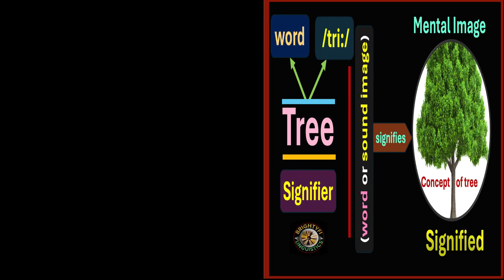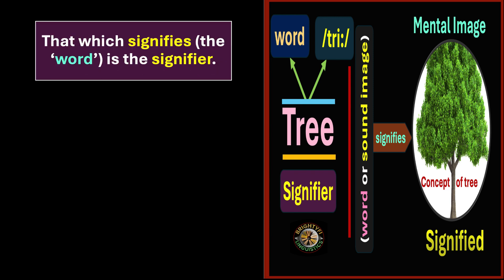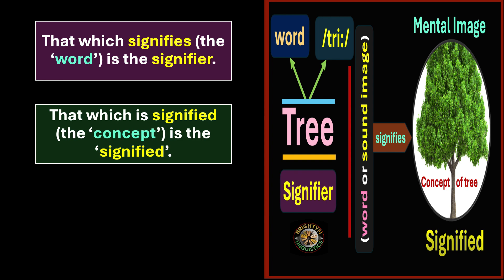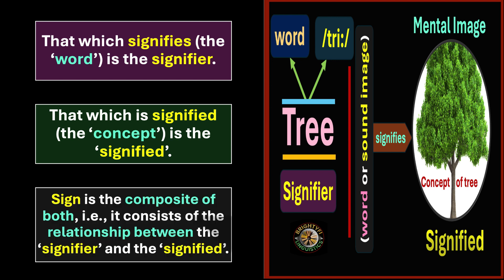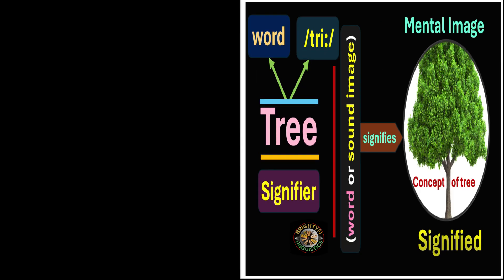To summarize: that which signifies — the word — is the signifier. That which is signified — the concept — is the signified, that is to say, the concept of the tree. The sign is the composite of both; it consists of the relationship between the signifier and the signified. A sign cannot be complete unless there is an association between the signifier and the signified — it is a combination of both.